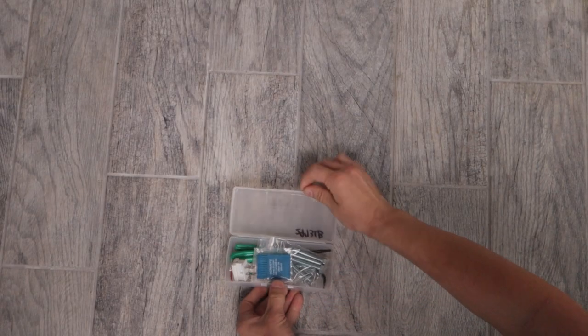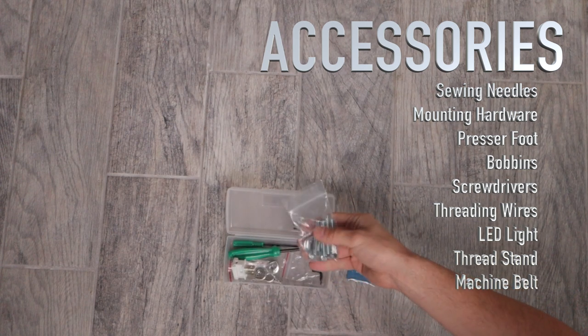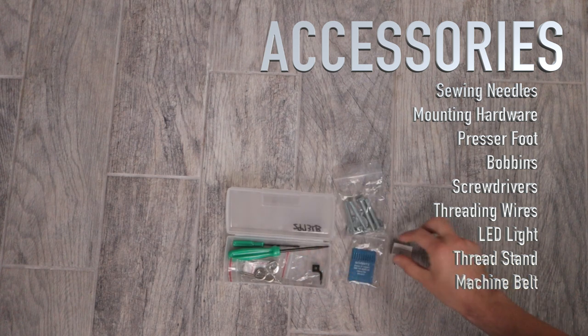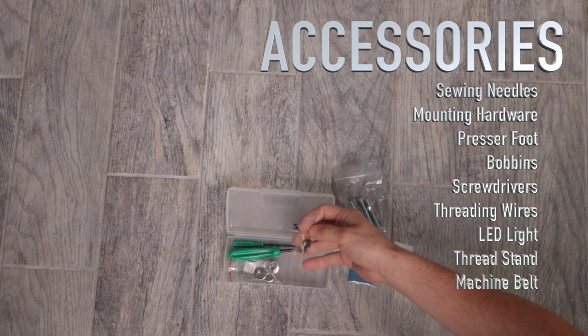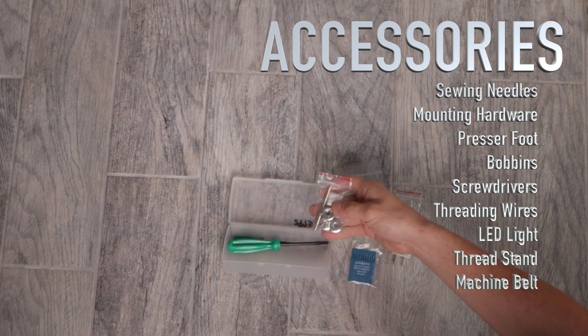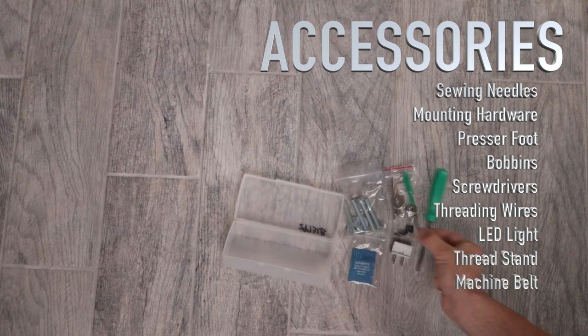You'll receive a small plastic kit with a bunch of items inside, such as a pack of needles, mounting hardware, an LED light plug, an extended presser foot, bobbins, and a thread guide, two screwdrivers, two thread wires, the LED light, the thread stand, and the machine belt.